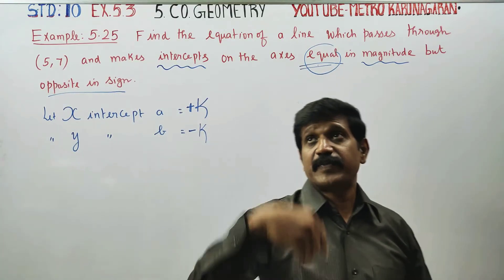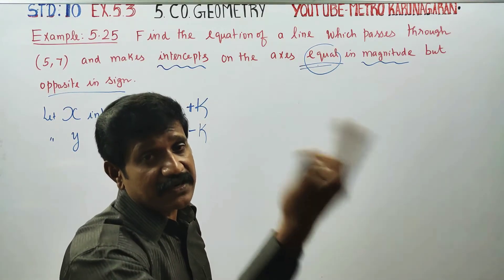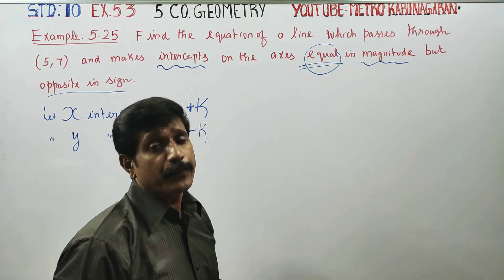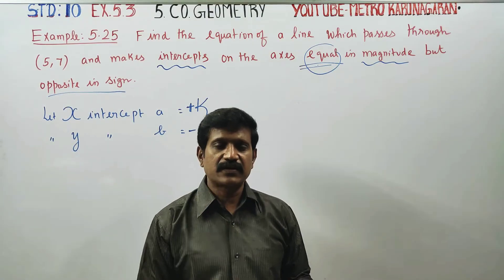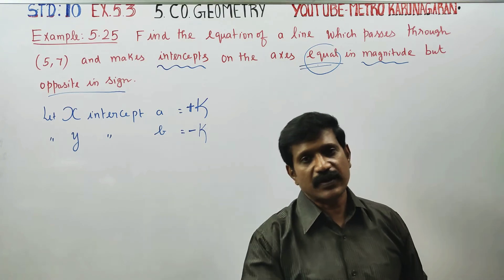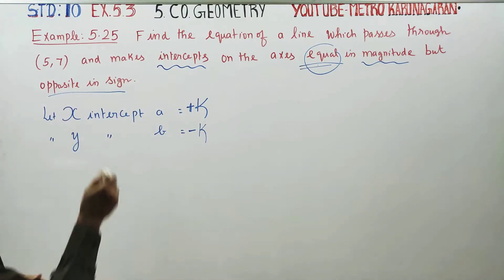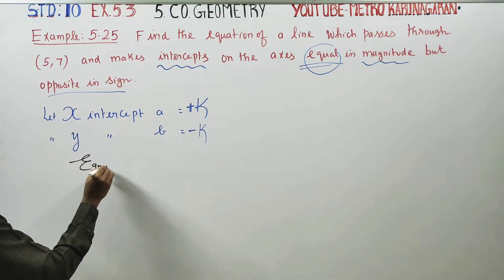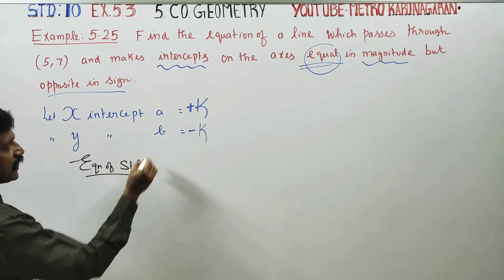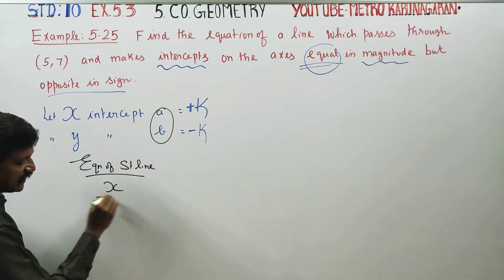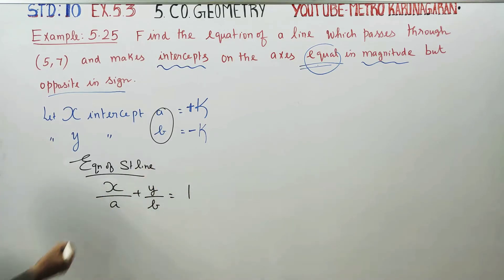Opposite in sign means: plus 5 and minus 5, plus 10 and minus 10, plus 100 and minus 100. So if x-intercept A equals k, then y-intercept B equals minus k. I will now write the equation of a straight line using the intercept form.